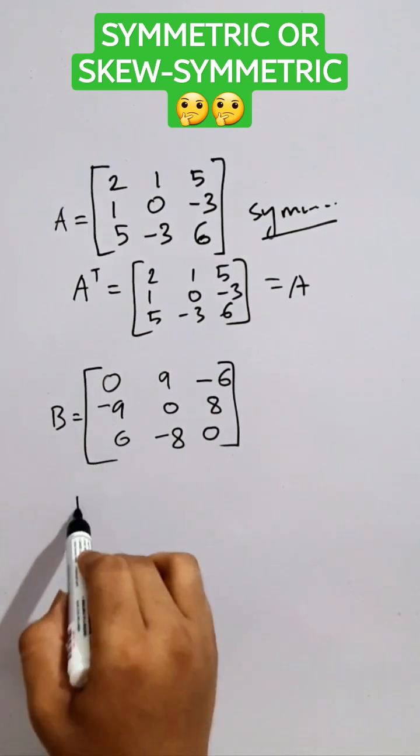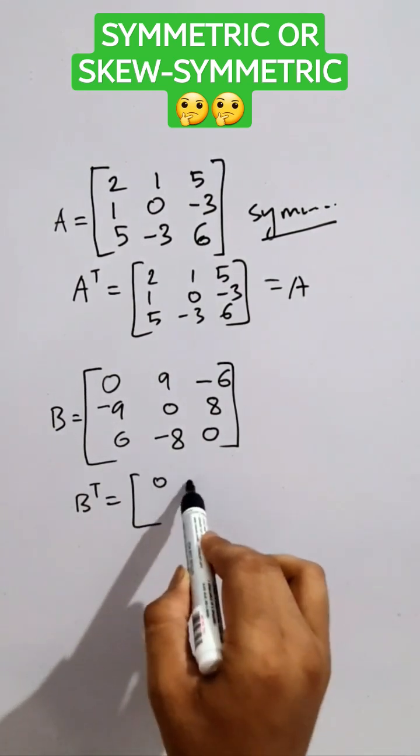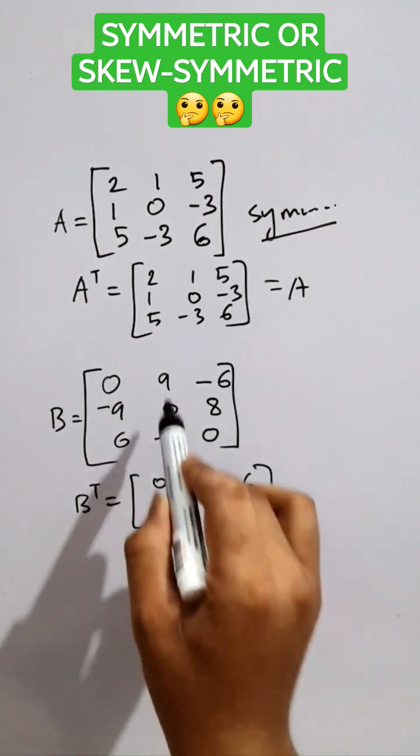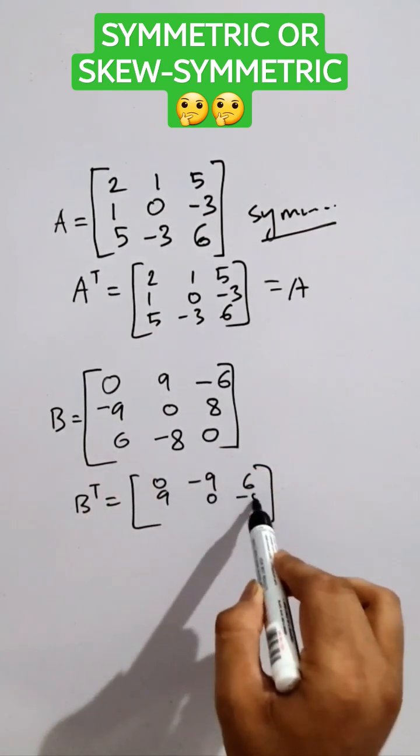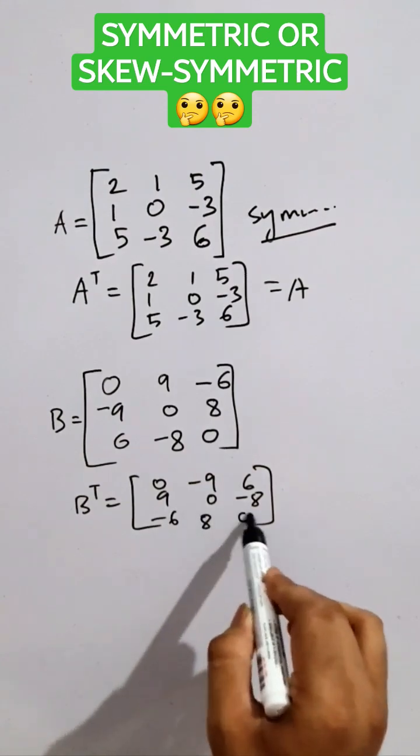Now, for this matrix, let's take the transpose of B. It will be 0, minus 9, 6. Making the columns as the rows, we will easily get that.